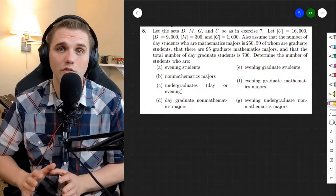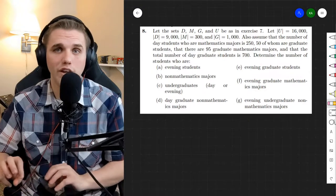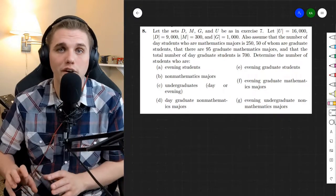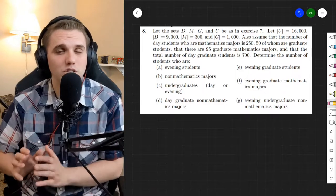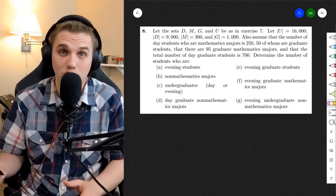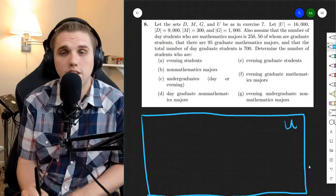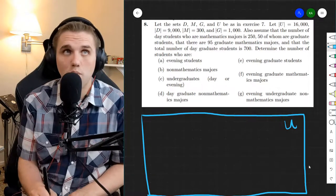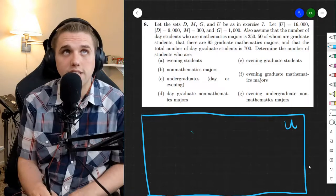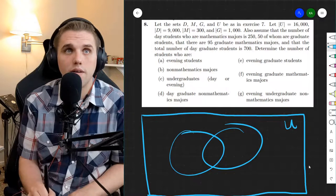Whenever you're solving one of these problems where you're trying to figure out how many are in each part of a Venn Diagram, the best way is first to draw it. So here we have a set U, which has 16,000 elements. I'll talk about that in a moment. And then we have three sets, D, M, and G.